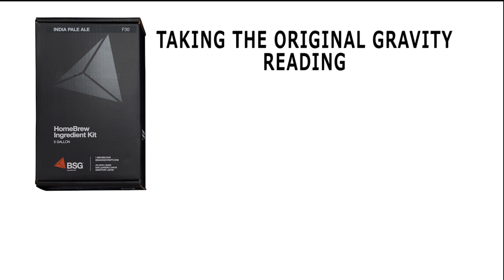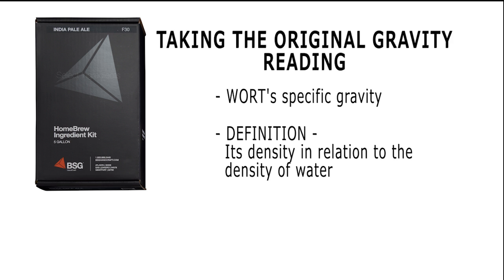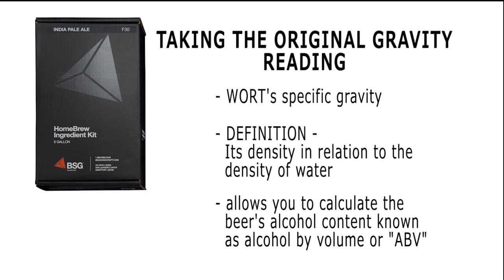Taking the original gravity reading: Once you have reached the proper volume, it is time to take your first gravity reading. The reading will provide you with the wort's specific gravity, which is its density in relation to the density of water. In the end, checking the gravity of your wort will help you ensure that you had a successful fermentation and will also allow you to calculate your beer's alcohol content, known as alcohol by volume, or ABV.